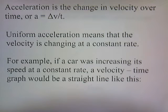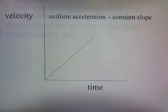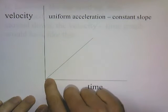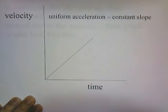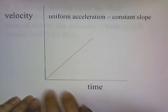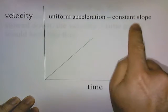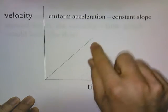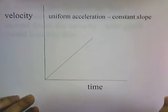For example, if a car were increasing its speed at a constant rate, a velocity-time graph would be a straight line. This shows that the velocity is increasing at a constant rate — it's just going to be a straight line. This is an example of a graph of uniform acceleration. The slope is constant, so if the slope of the line is constant, you have uniform acceleration.